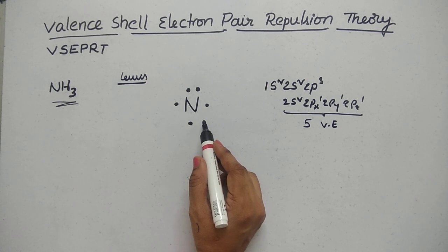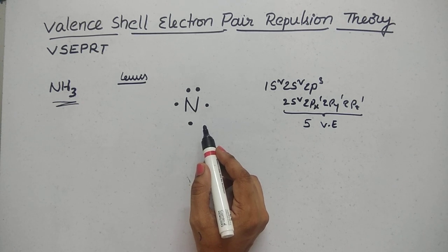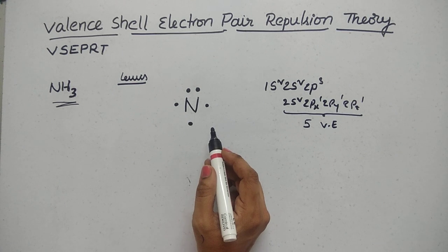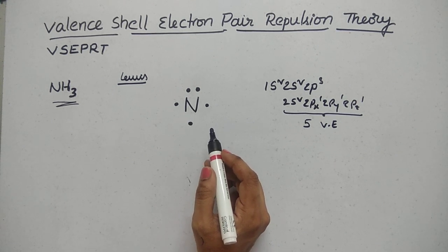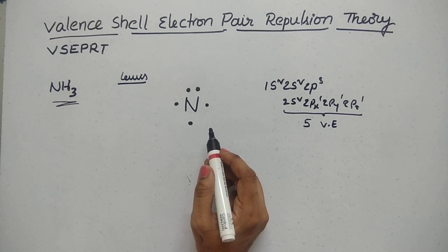Now let's talk about the covalent bond. A covalent bond is formed by sharing two electrons — a bond pair — between two atoms. You know the bond pair: when an electron pair is shared, a bond is formed.